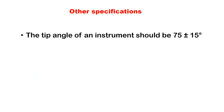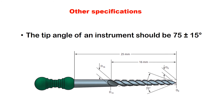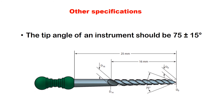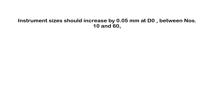Other specifications have been added. The tip angle of an instrument should be 75 degrees, plus or minus 15 degrees. This is the angle at the tip of the hand instrument.